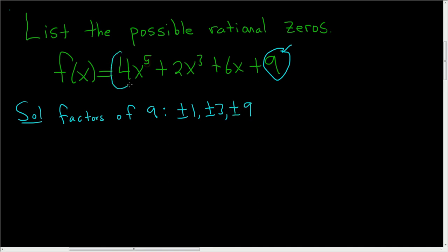Now you look at the factors of this number here. So factors of 4. And the factors of 4 are plus or minus 1, plus or minus 2, and plus or minus 4.